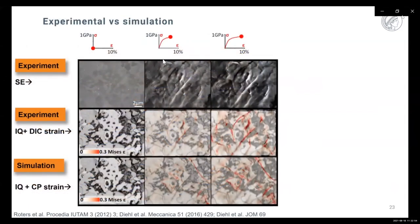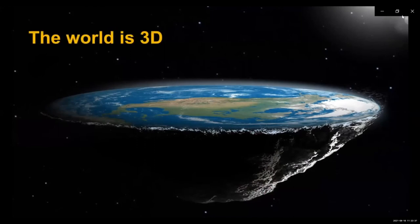Comparing experiment to simulation step-by-step as a function of deformation: secondary electron imaging from the electron microscope, image quality, and digital image correlation show local strain distribution in the experiment, alongside the corresponding simulation. Some features — particularly those with very high strain and stress contrast — are captured well. Other features appear quite differently in the simulations. The simple answer is that the microstructures are also three-dimensional, not two-dimensional.